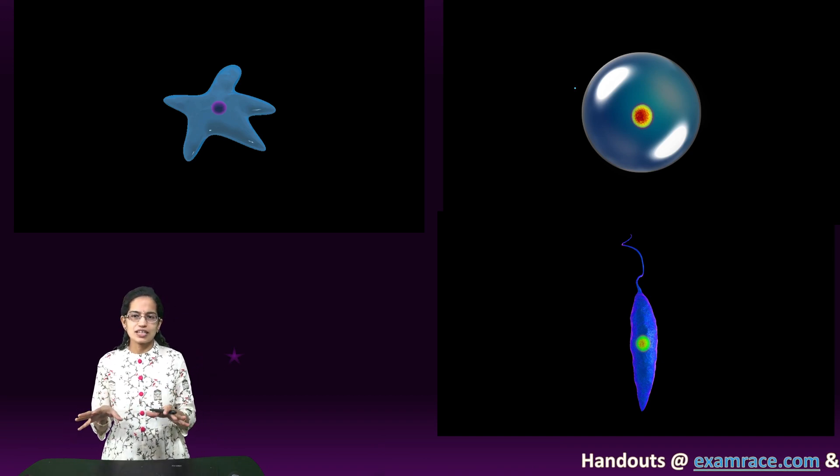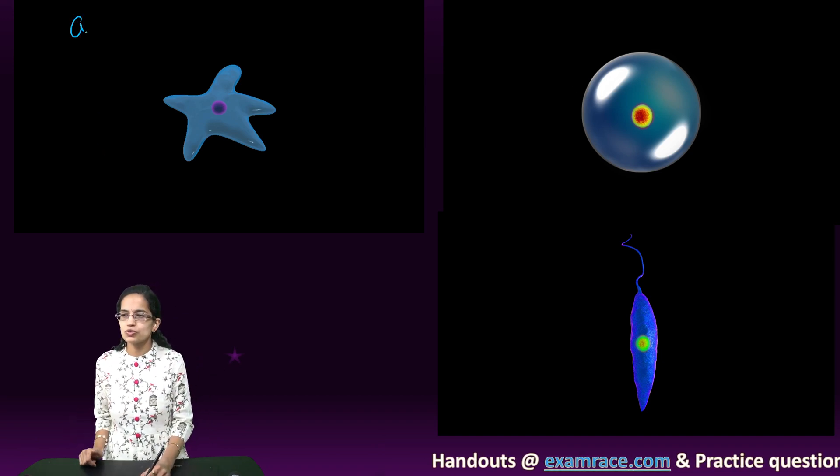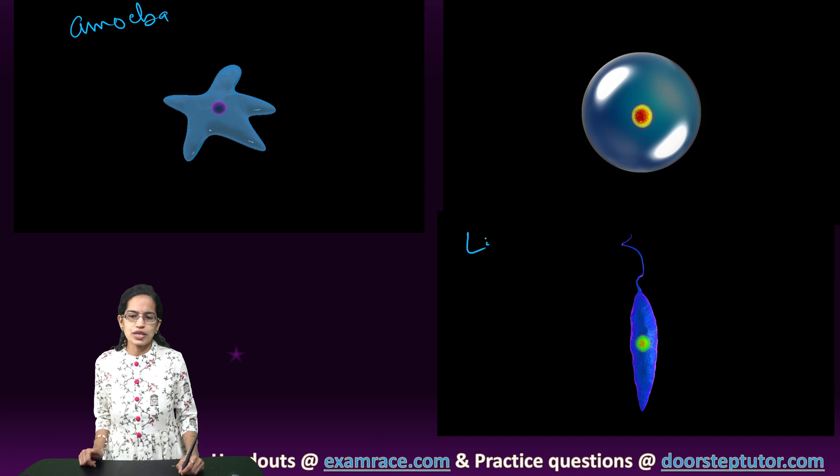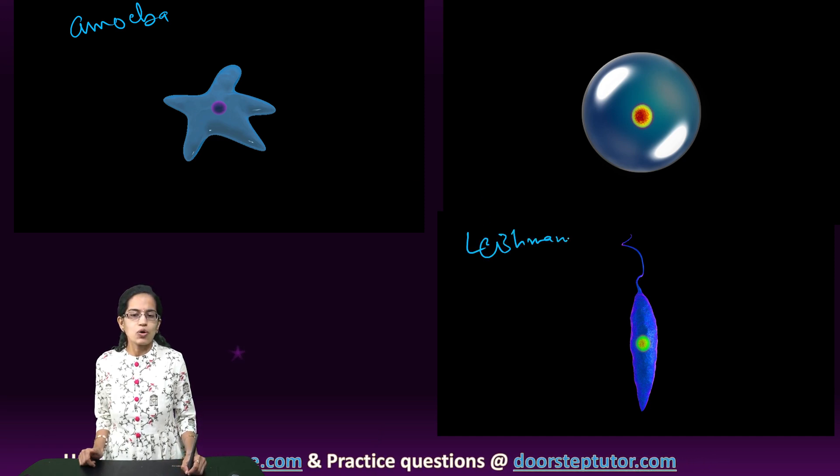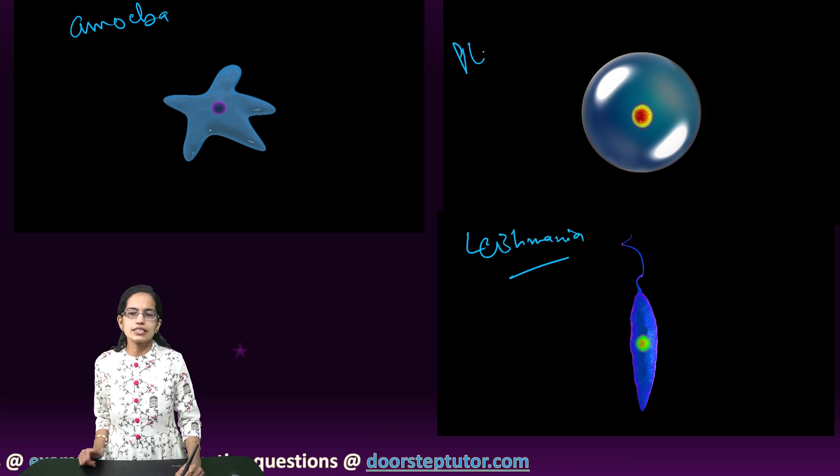We have three different creatures here that we have taken into account. The first one we have here is amoeba. The next one we have is leishmania, which causes kala azar, and the last is plasmodium.